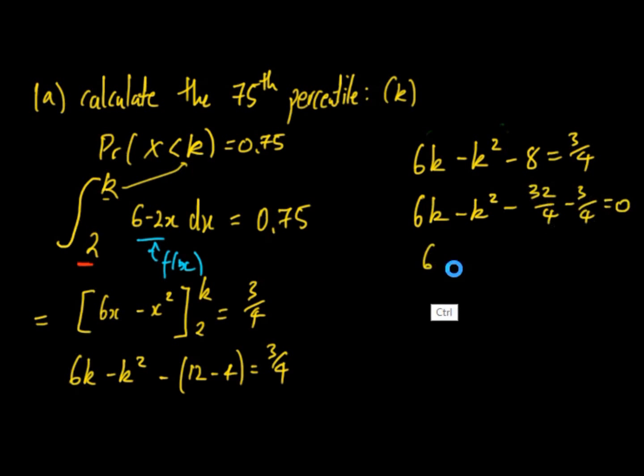We get, we'll put the k squared out in the front, so negative k squared plus 6k minus 35 on 4 is equal to 0.